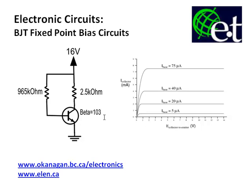The best way to examine fixed point bias circuits is to do an example. We're going to figure out the load line for this circuit — all the possible values on the characteristic curves — as well as the actual DC operating point, sometimes called the quiescent point or Q point.